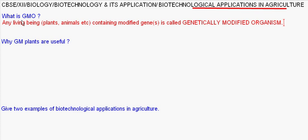For example, Bt cotton or a pest-resistant plant — these are genetically modified plants. We can also mention insulin produced from genetically modified E. coli cells, which will be discussed later.